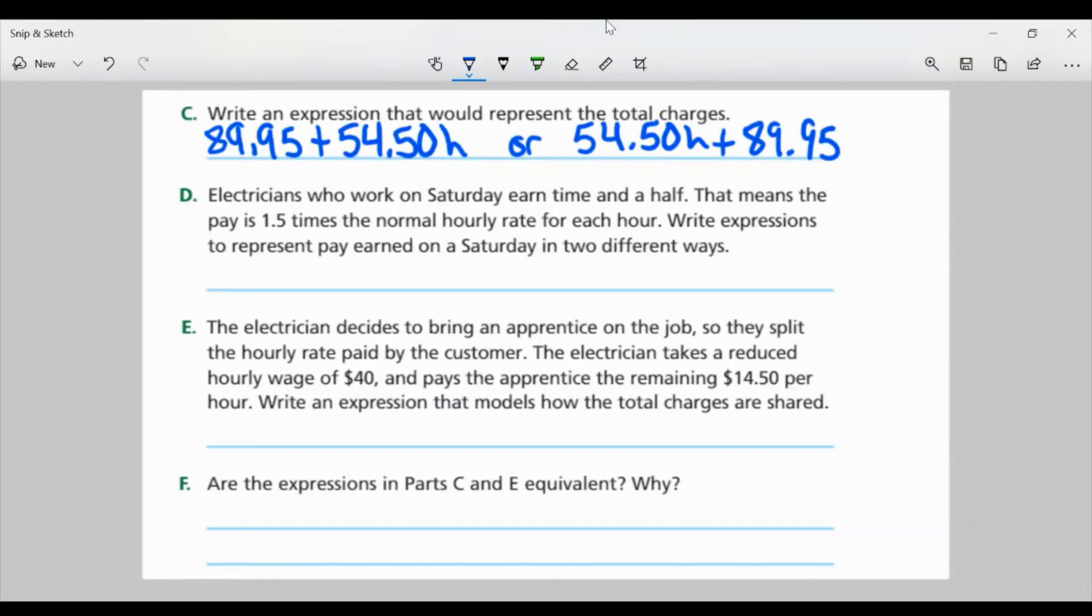Part D, electricians who work on Saturday earn time and a half. That means the pay is 1.5 times the normal hourly rate for each hour. Write expressions to represent pay earned on a Saturday in two different ways. So we know he gets paid $54.50 per hour. Time and a half means we add half of that to it. So I have 54.50 plus half of $54.50, which is 27.25.